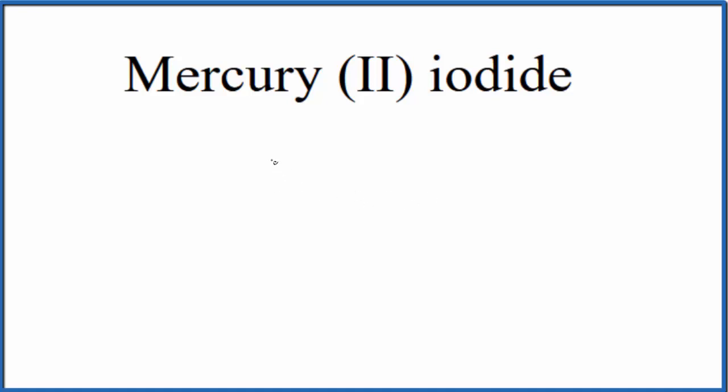So we write the element symbol for mercury, that's Hg, and the 2 means we'll have a 2+ charge. For the iodide here, let's look up iodine on the periodic table.